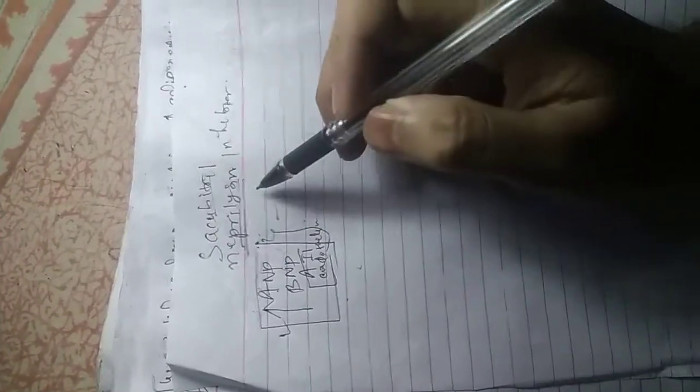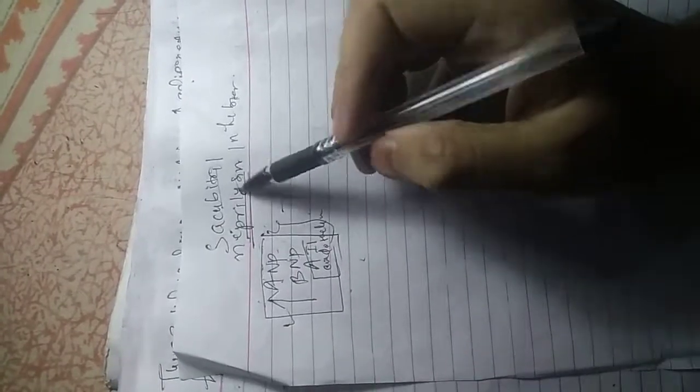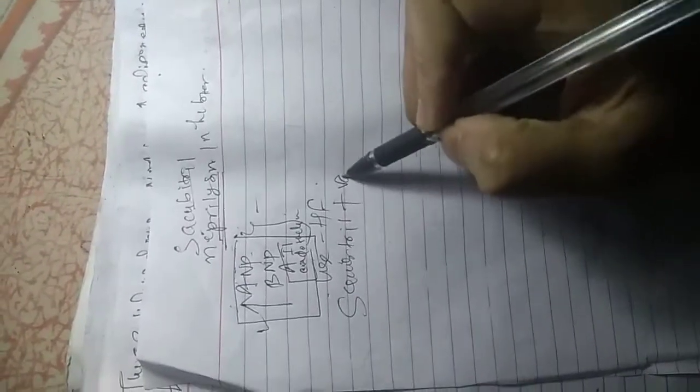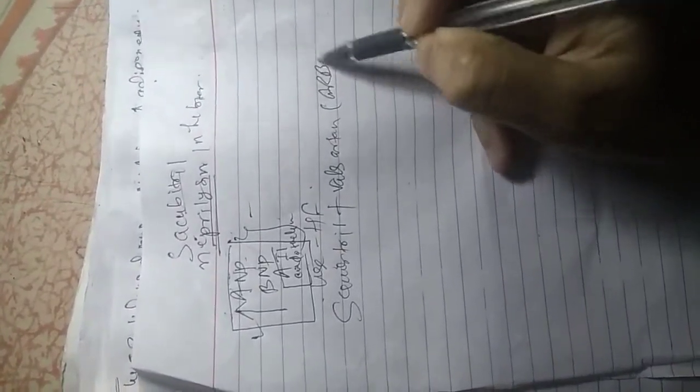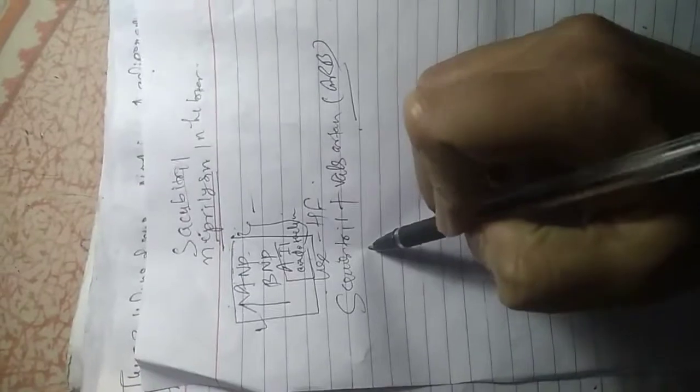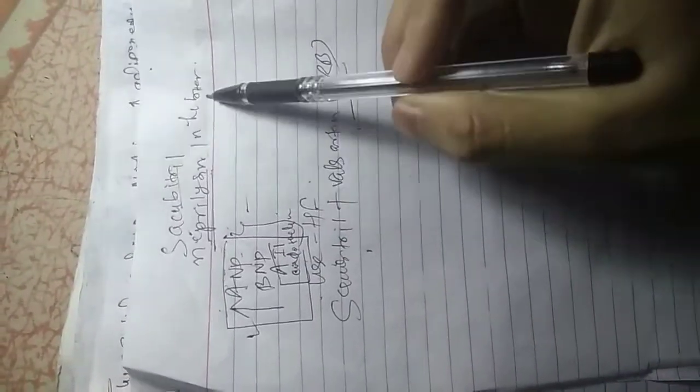This is described in heart failure. And why is sacubitril combined with valsartan? It means it is an ARB. Why should we combine ARB with sacubitril?